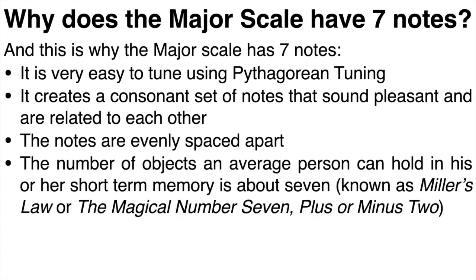And finally there's actually also a psychological reason why we landed on the major scale having seven notes. Research done in the 1950s found that the number of objects an average person can hold in his or her short-term memory is about seven. This is known as Miller's law or the magic number seven plus or minus two. So it's probably not a coincidence that the main scale in western music has seven notes. That's the number of things we can easily remember in our short-term memory. A scale consisting of 27 notes for example might be a little bit harder to remember and use.